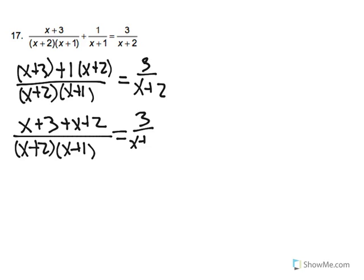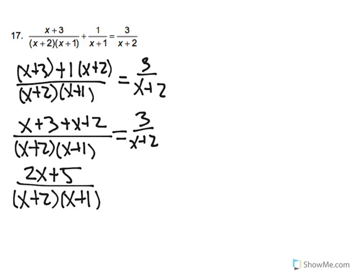So we have 2x plus 5 over x plus 2 times x plus 1 equal to 3 over x plus 2.